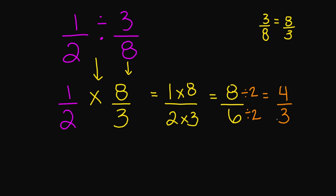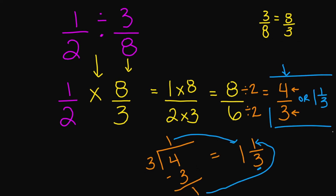However, this is an improper fraction because the numerator is larger than the denominator. So we're going to turn this into a mixed number. You have three on the outside, four on the inside. Three goes into four one time. Three times one is three. Four minus three is going to equal one. So your final answer is four over three, or one and one third.